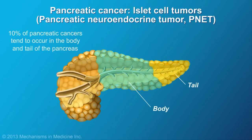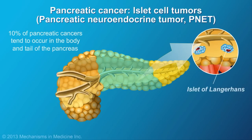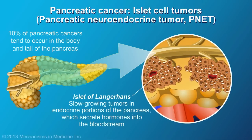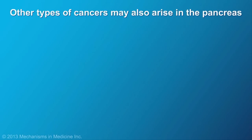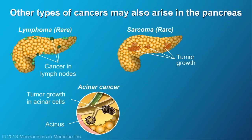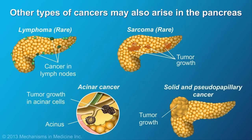About 10% of pancreatic cancers are endocrine or islet cell cancers. These tend to be slower-growing tumors located in the body or tail of the pancreas. Other types of cancers like lymphomas, sarcomas, acinar cancers, and solid and pseudopapillary cancers may also arise in the pancreas.